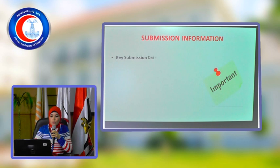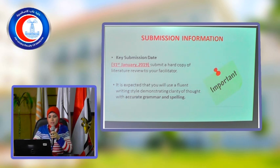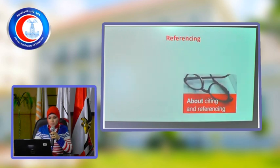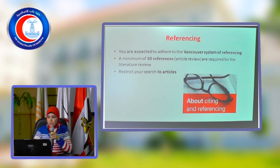The date of key submission is 31 January 2019. You will submit a hard copy of the literature review to this facility. We'll be submitting as a group of 10. It is expected that you'll use a fluid writing style with clarity of thoughts, accuracy, proper grammar, and good spirit. References will be used in Vancouver style, which you were taught in the section. At least 10 references are required for the literature review. Restrict your search to journal articles — not books or reports.